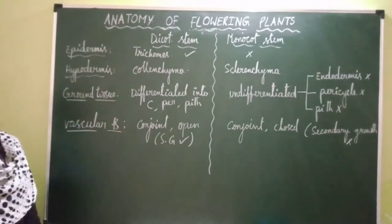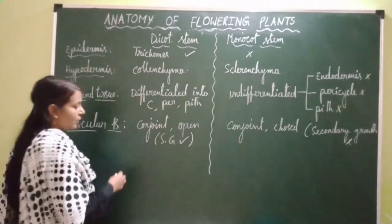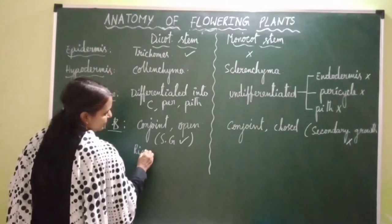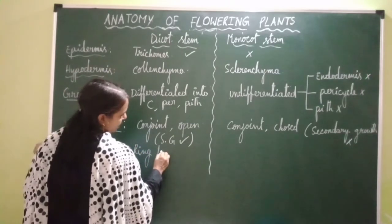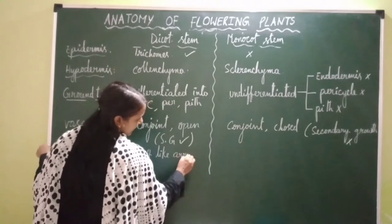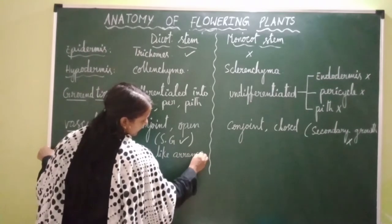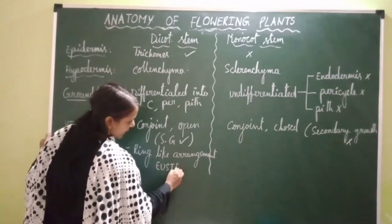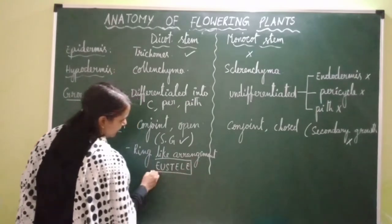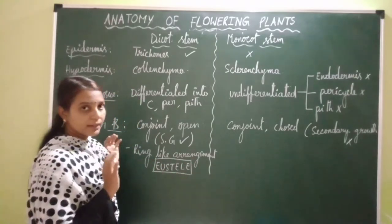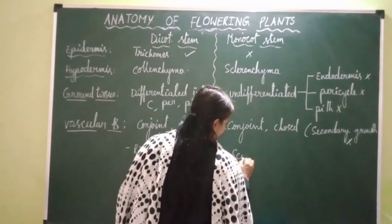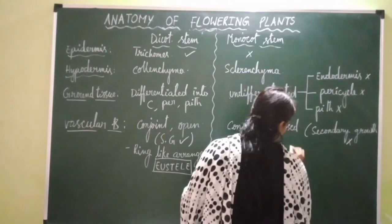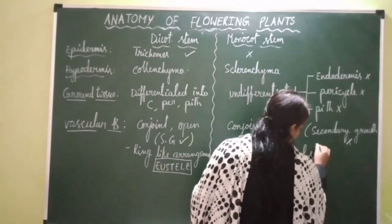Another difference about vascular bundles: in dicot stem, these vascular bundles are arranged in the form of a ring — a ring-like arrangement is present — and hence the type of stele is eustele. Whereas in case of monocot stem, vascular bundles are scattered in the ground tissue, and because they are scattered, the type of stele is called atactostele.